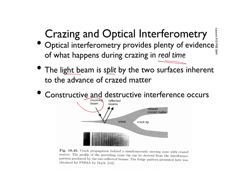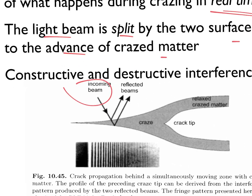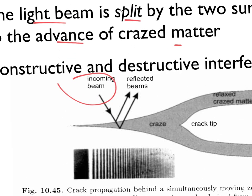This light beam is split by two surfaces inherent to the advance of craze matter. So we think about a crack in this context, and then that crack transitions into a craze region, and that transitions into the plastic zone. There are two surfaces there that are being interrogated by optical interferometry, and so we have an incoming beam.